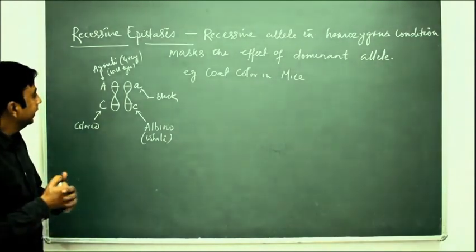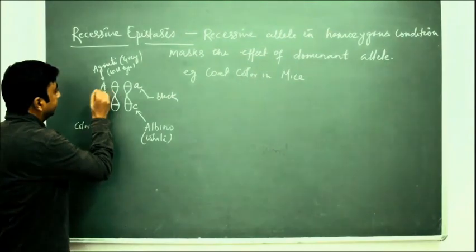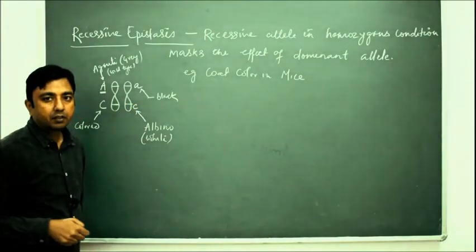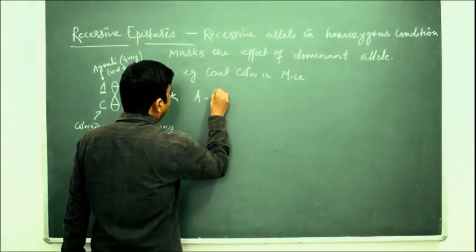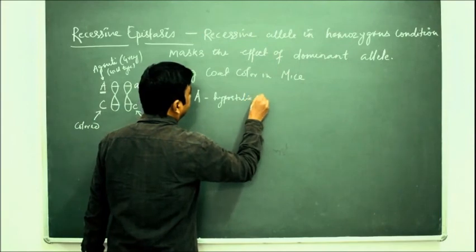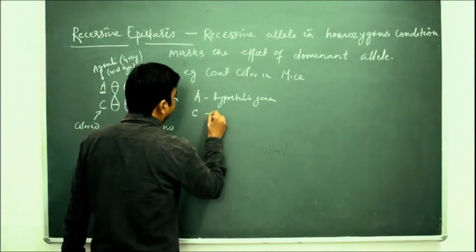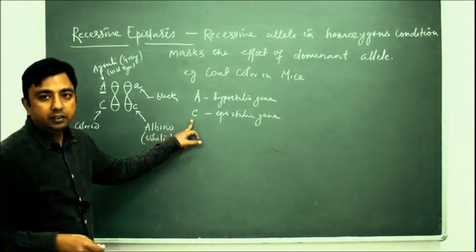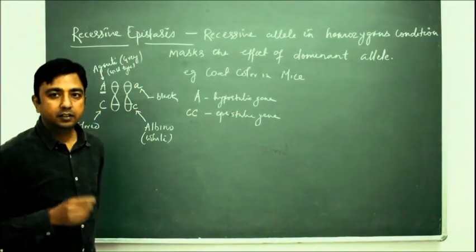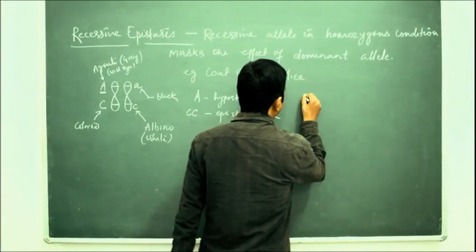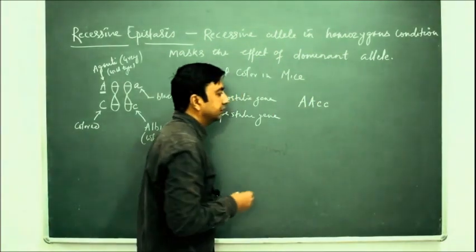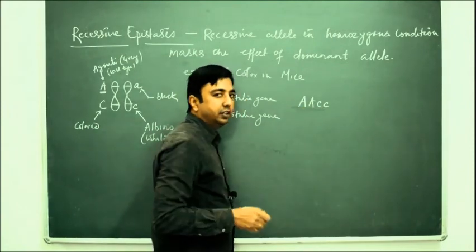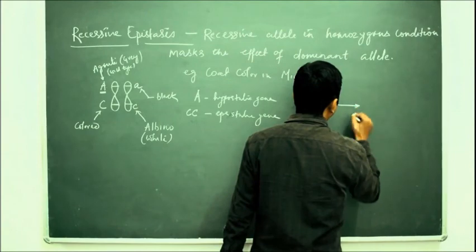It is important to mention that capital A is hypostatic to homozygous recessive cc. So capital A is hypostatic and small c small c is epistatic. Since it is recessive epistasis, it has to be in homozygous recessive condition. For example, if we take capital A capital A and small c small c — capital A is hypostatic and small c small c is epistatic — so the coat color will be albino.